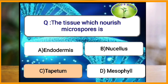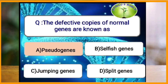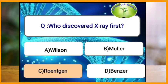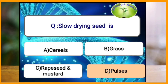The defective copies of normal genes are known as pseudogenes. Who discovered X-rays for the first time? Roentgen is the scientist who discovered X-rays for the first time. Slow drying of seeds is required in pulses.